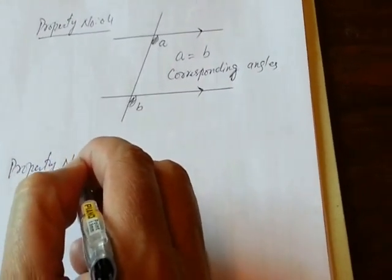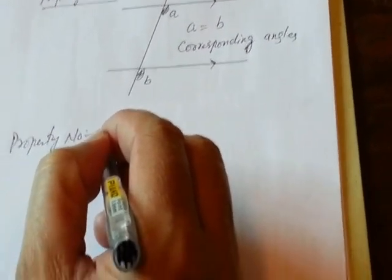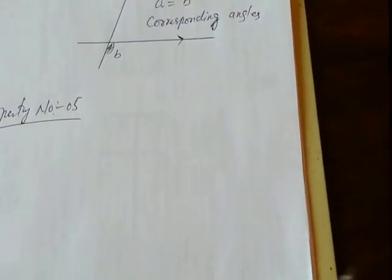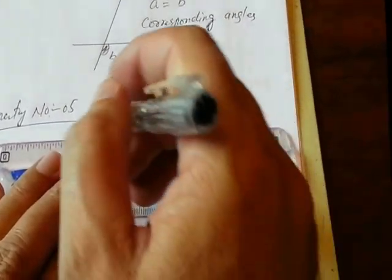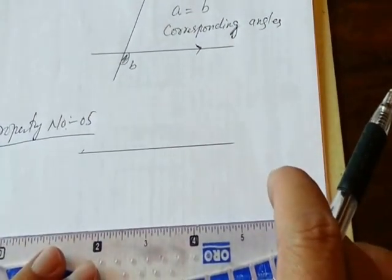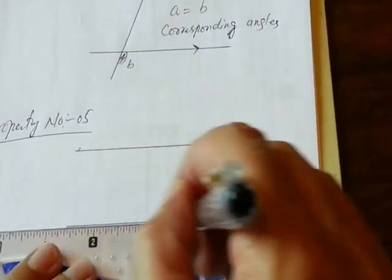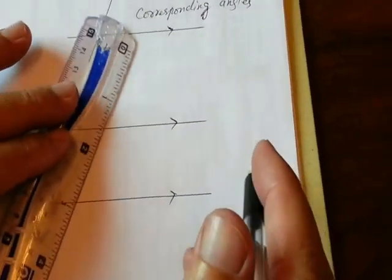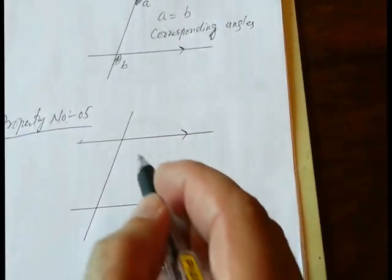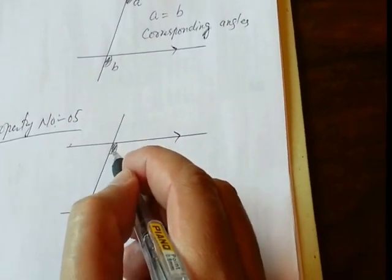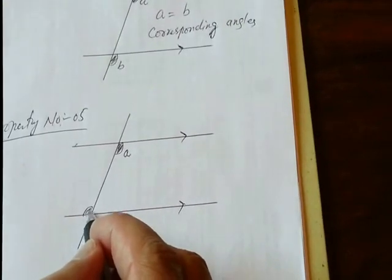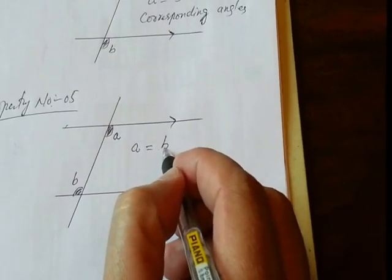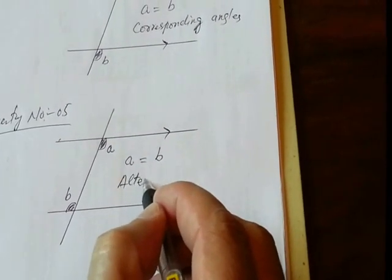Property 5: When two lines are parallel to each other and another line cuts through both, if one angle is here and the other is at point B, both angles are equal — being alternate angles.